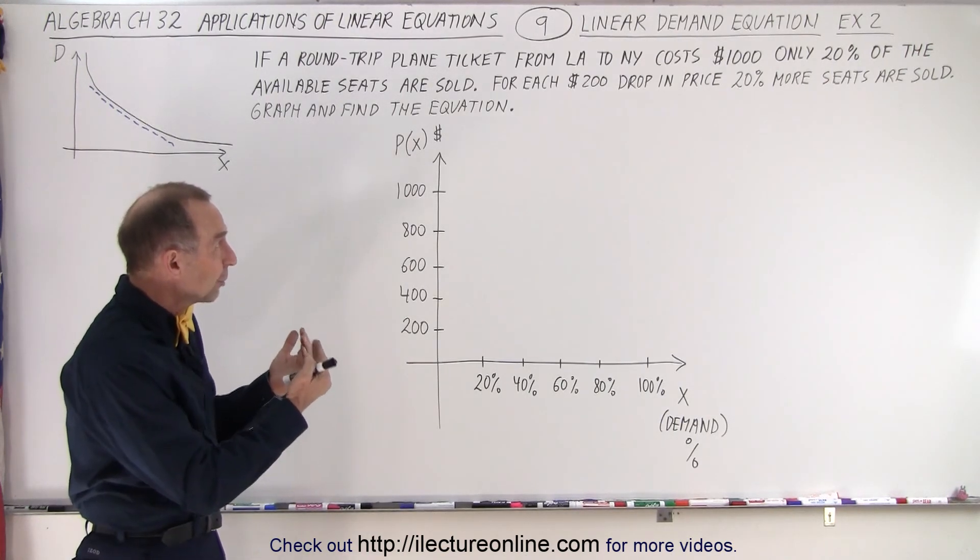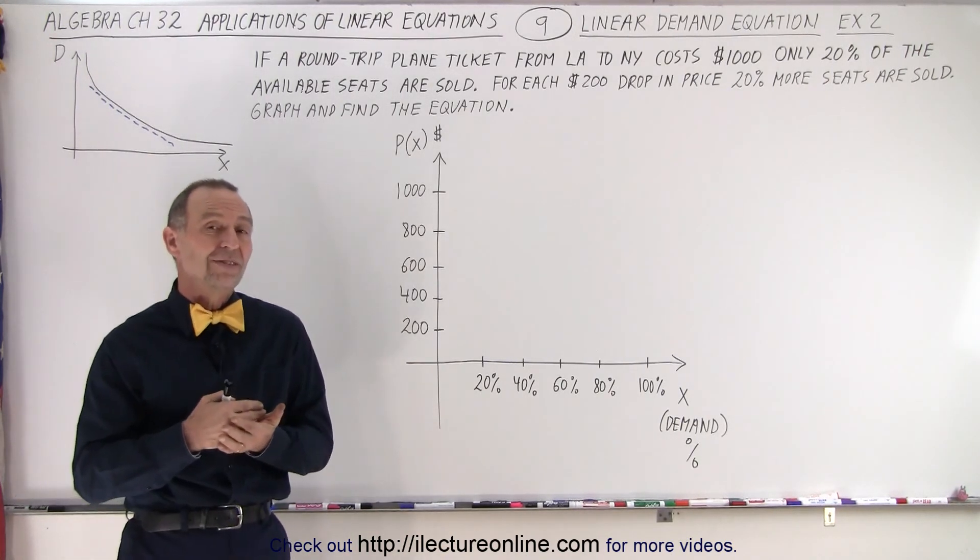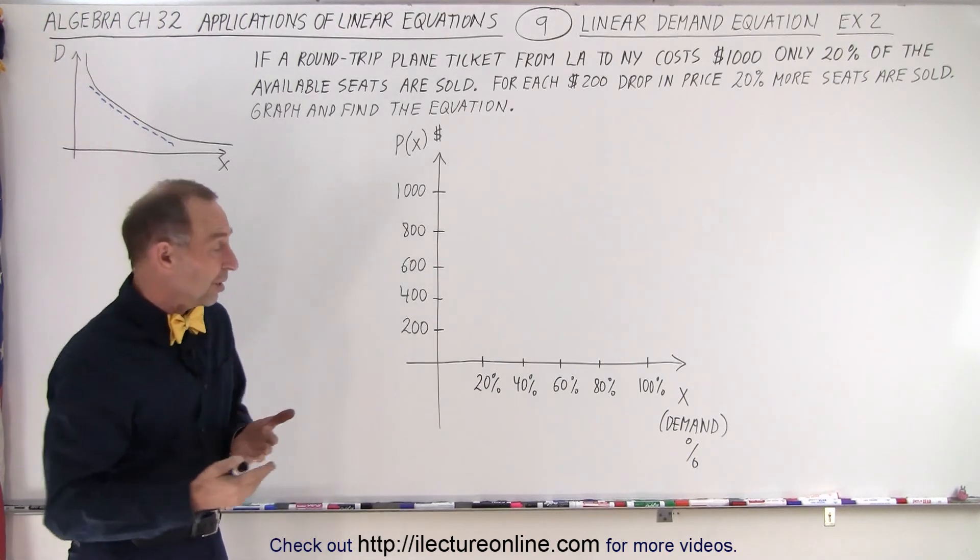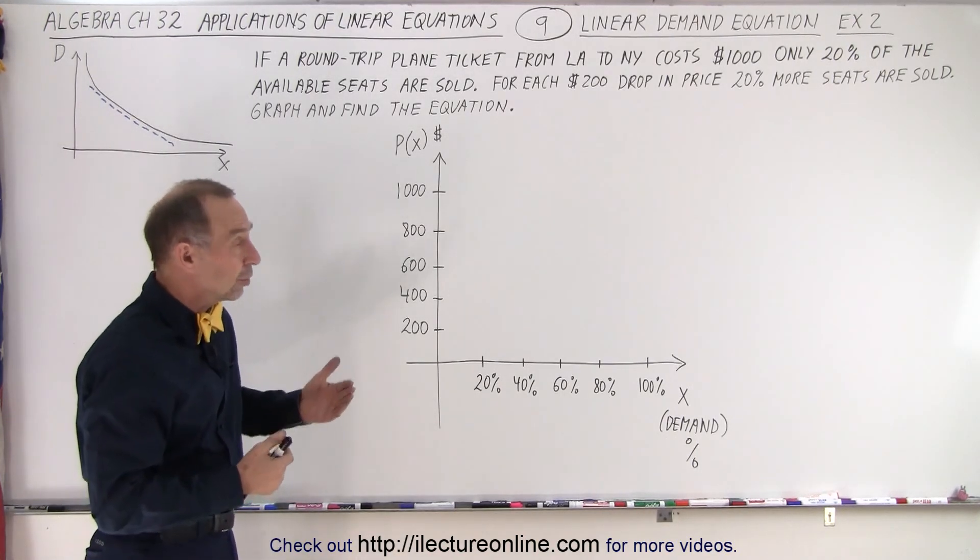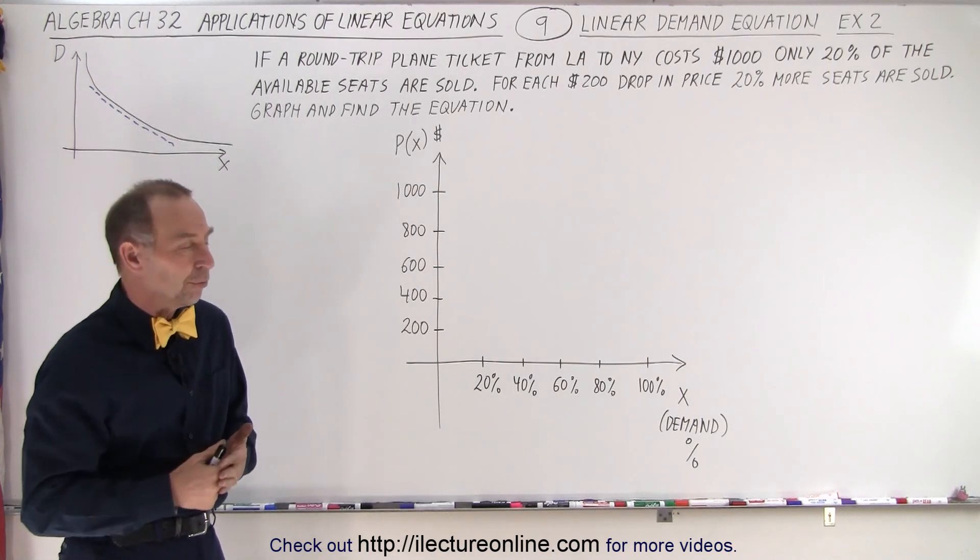But then if they drop it by $200, the number of seats that are sold increased by 20%. So from 20 we go to 40. If we drop another $200, it goes now up to 60 and so forth.